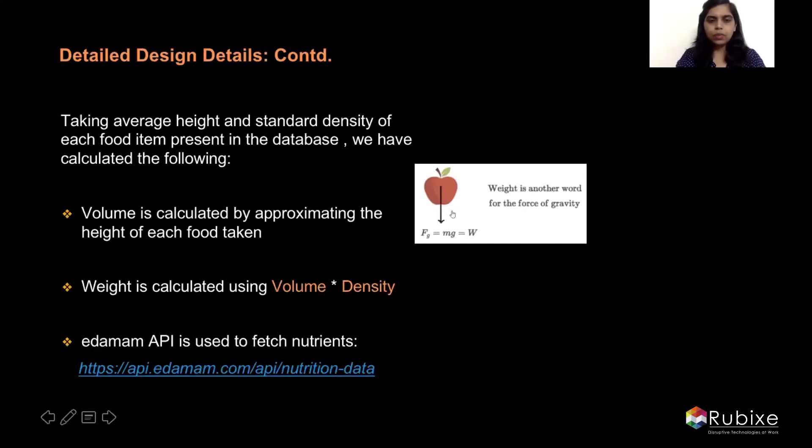Next was to calculate the volume of the detected object. We analyzed many different approaches and did our own testing. The shortlisted approaches were: taking two images — one top image and one side image; estimating the height of the food objects; calculating pixels per square inch; and using depth-sensing cameras. After evaluating the pros of each approach, we finalized the height estimation approach and went ahead with that.